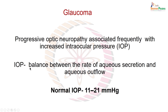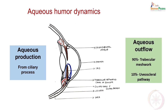Intraocular pressure is determined by the balance between the rate of aqueous secretion and the aqueous outflow. If the secretion is more or the outflow is obstructed, this increases pressure and leads to the most common form of Glaucoma. Normal intraocular pressure is between 11 and 21 mmHg, and you can sometimes feel the pressure by putting two fingers on the eyelid — that is a clinical impression of increased intraocular pressure.